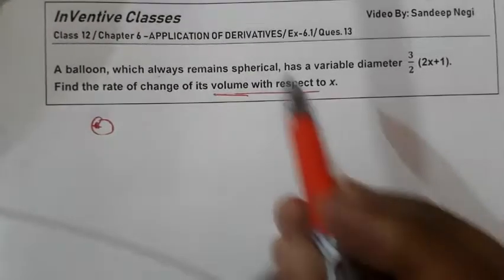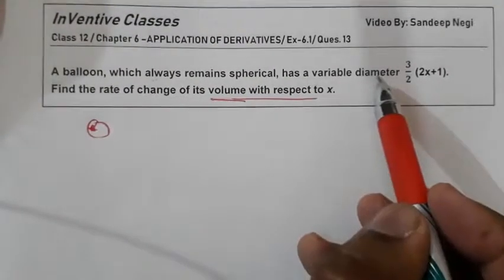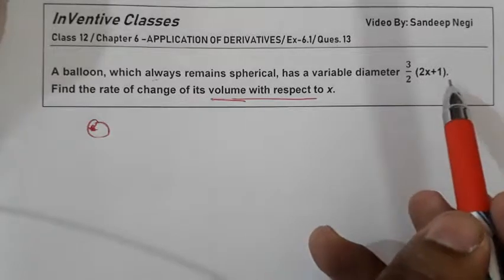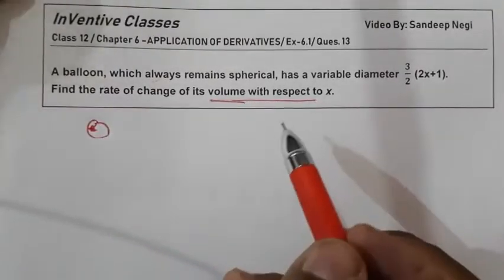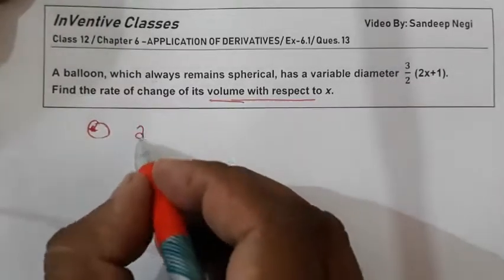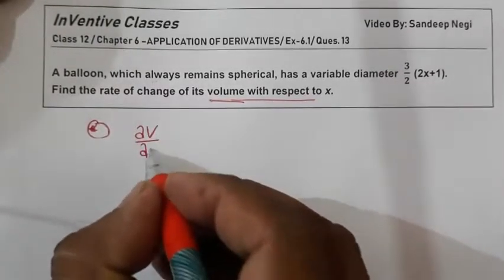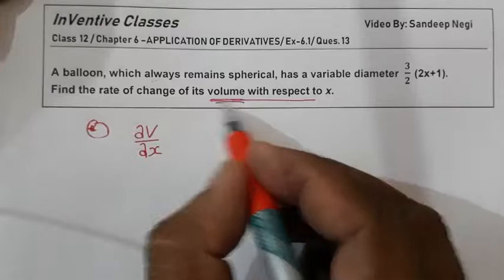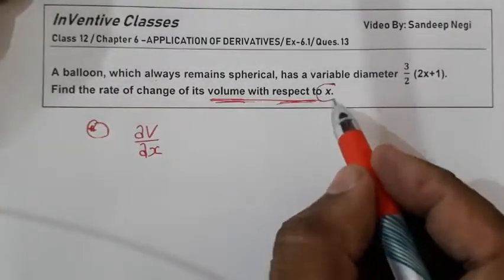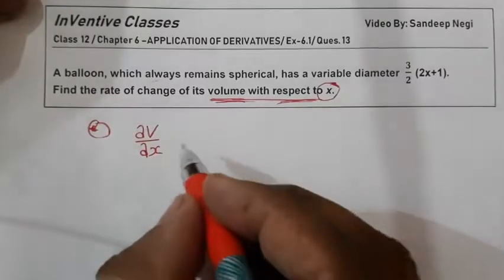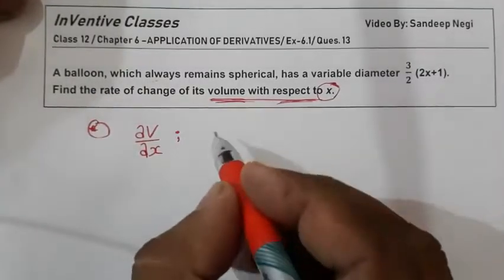A balloon which is always spherical has a variable diameter of 3/2(2x+1). Find the rate of change of its volume with respect to x. So you have to find dV/dx because the volume in which respect you have to differentiate is x's respect.